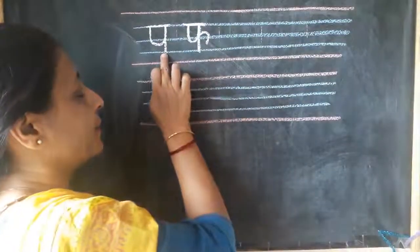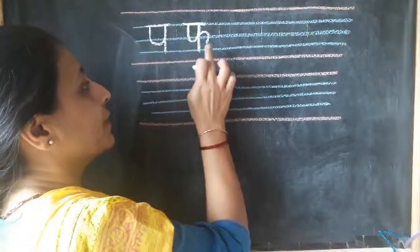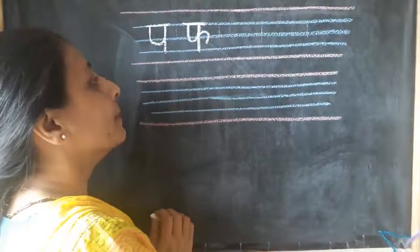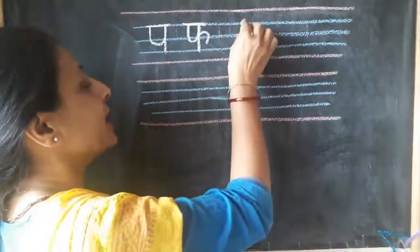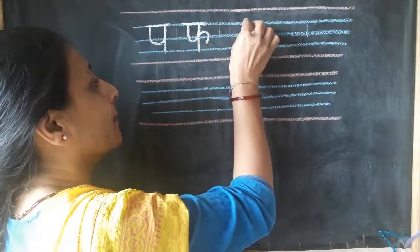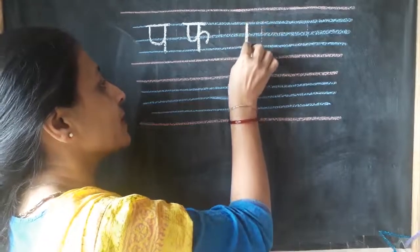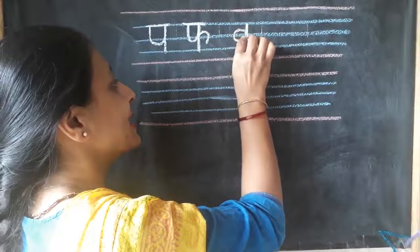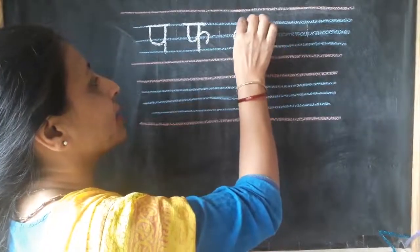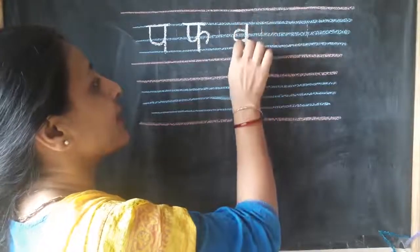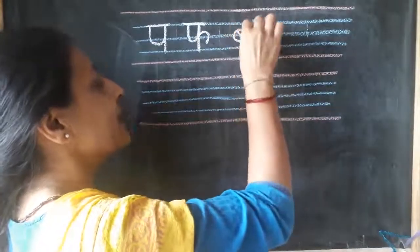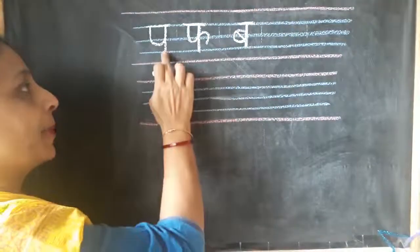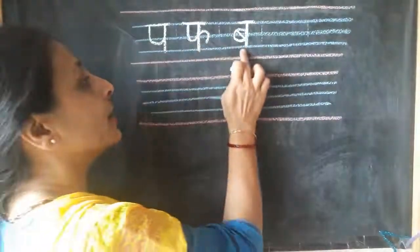Now, after Pa and Fa, which letter will come? B — very good. First I will draw a standing line and then a C shape, that C will not touch the first line or third line, and a slanting line inside — B. So we have Pa, Fa, Ba.